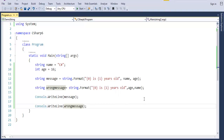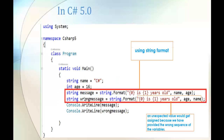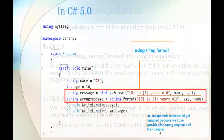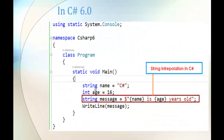Coming back to the presentation — how did C-Sharp version 6 solve this? In C-Sharp version 6 we have a cleaner way to format a string by writing our own arguments directly instead of referring to them by placeholders. We will not use placeholders in C-Sharp version 6. One important thing to keep in mind is to use the dollar symbol before the start of the string. This image explains it clearly — two variables name and age are used to create a message variable using string interpolation.